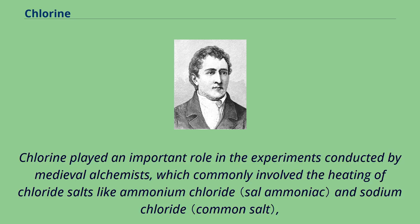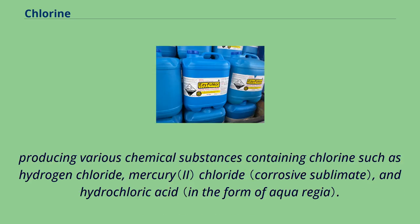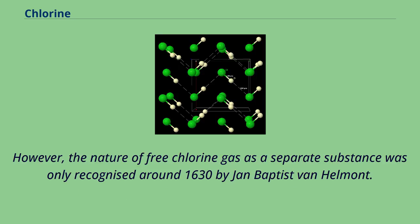Chlorine played an important role in experiments conducted by medieval alchemists, which commonly involved the heating of chloride salts like ammonium chloride and sodium chloride, producing various chemical substances containing chlorine such as hydrogen chloride, mercury chloride, and hydrochloric acid. However, the nature of free chlorine gas as a separate substance was only recognized around 1630 by Jan Baptist Van Helmont.